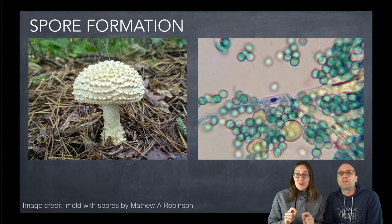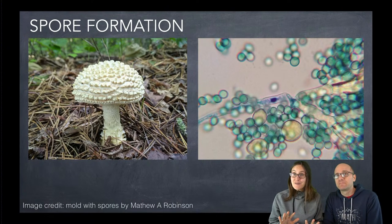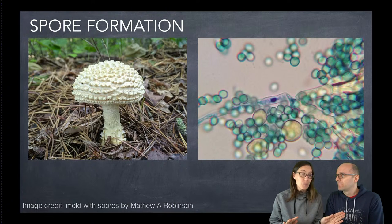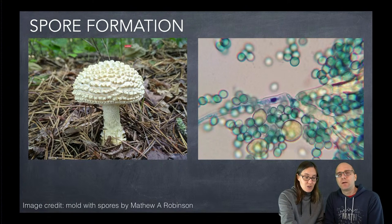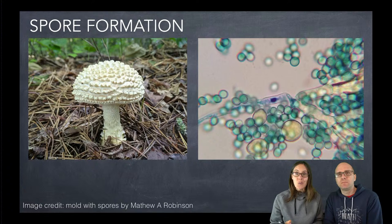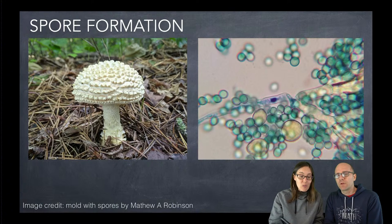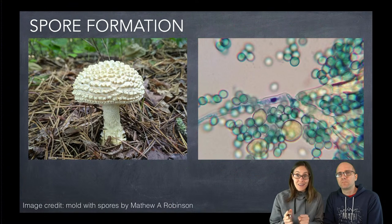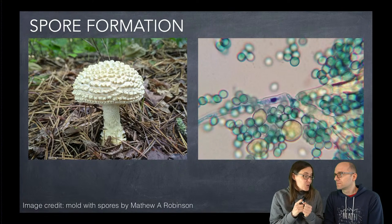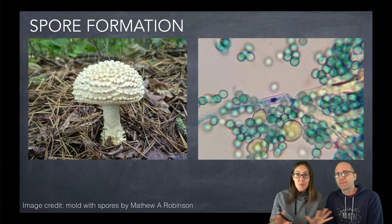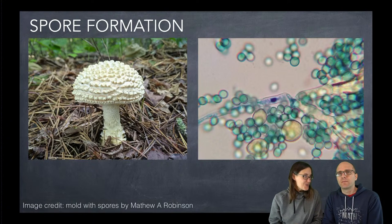The last reproductive strategy I want to talk about is spore formation. This one is kind of unique because it can be either an example of asexual reproduction or sexual reproduction. Most of the time when you see a mushroom, it's an example of sexual reproduction, where the spores being released are a little bit different than the fungus that produced them. But a lot of times spores are made as a way of cloning the organism. The cool thing about spores is they're like seeds — they can lie dormant until the conditions are right, for years, and not until it's time to grow will they wake up and start to live.